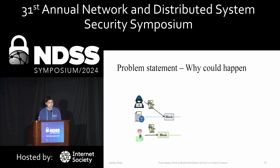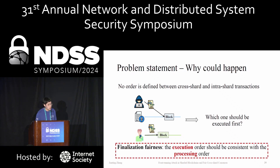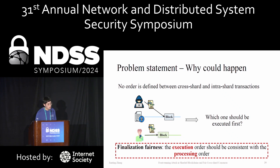This front-running attack occurs because there is no ordering between intra-shard transactions and cross-shard transactions. In this paper, we define finalization fairness, which indicates that the execution order should be consistent with the processing order. Finalization fairness is the antidote to front-running attacks, so to prevent them, we need to guarantee finalization fairness.